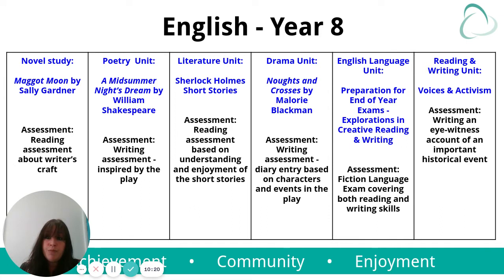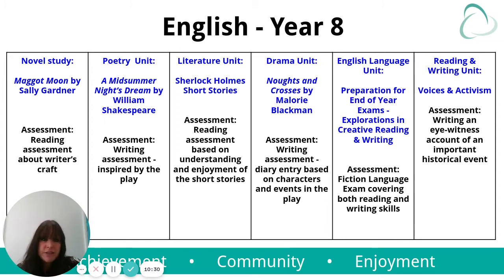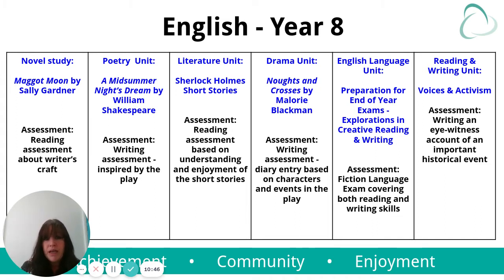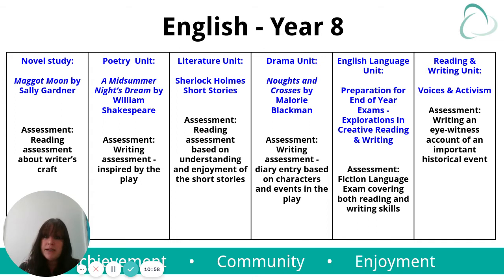Moving into Year 8, we open with 'Maggot Moon' by Sally Gardner — a dystopian novel. We discuss the expectations and conventions of dystopia, comparing it to utopia, do a fast read of the whole novel, and explore the different techniques and themes. That builds into a reading assessment on the writer's craft. We then move into 'A Midsummer Night's Dream' by Shakespeare, picking up on the foundation from Year 7, with a writing assessment inspired by the play — interleaving reading and writing skills.